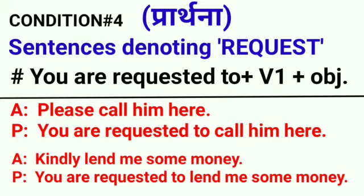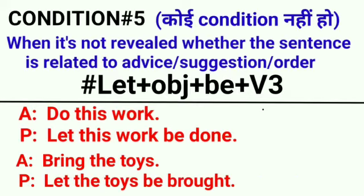See the next condition — condition 4: sentences denoting request — प्रार्थना। जहां request की बात हो, उसमें beginning में 'you are requested to' लगाएंगे, फिर verb का first form और फिर object। Example: 'please call him here' — passive: 'you are requested to call him here'. दूसरा: 'kindly lend me some money' — passive: 'you are requested to lend me some money'. ऐसे sentences आप easily identify कर सकते हैं — जहां 'please' शुरू में या end में लगा हो, या 'kindly' लगा हो — तो ऐसे sentences request denote करते हैं। इस case में 'you are requested to' लगाकर passive form बनाते हैं।